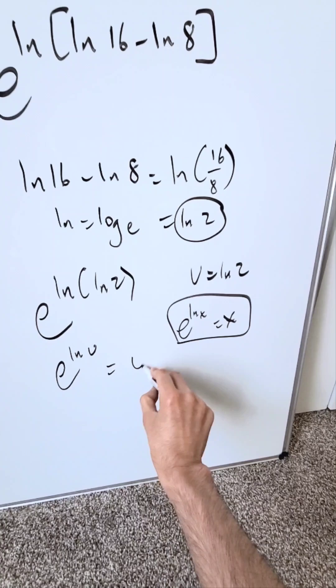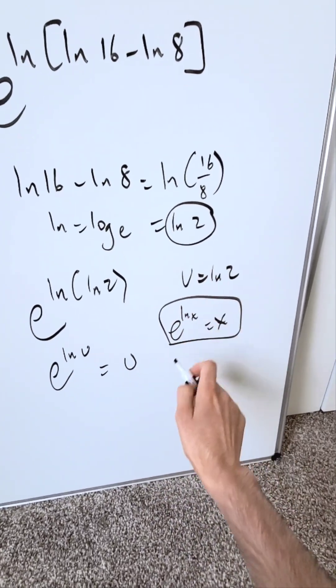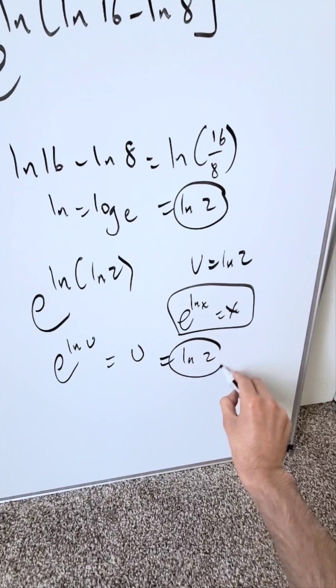Therefore, this is equal to u by means of this identity. But u is equal to natural log 2. Therefore, the end result here is natural log 2.